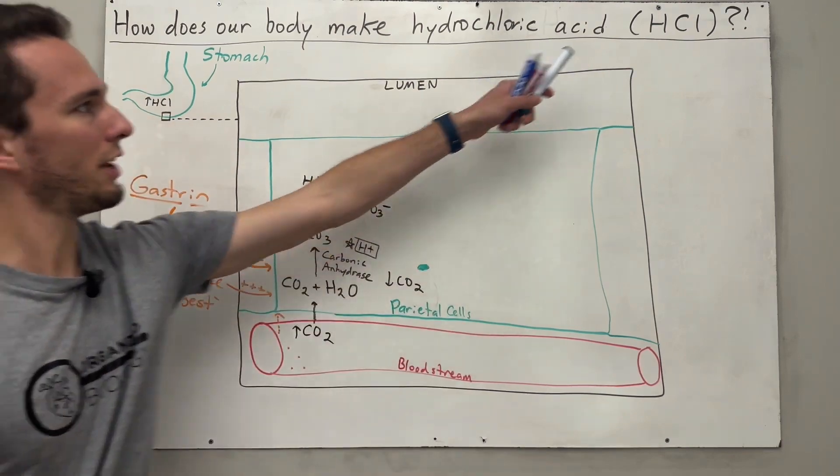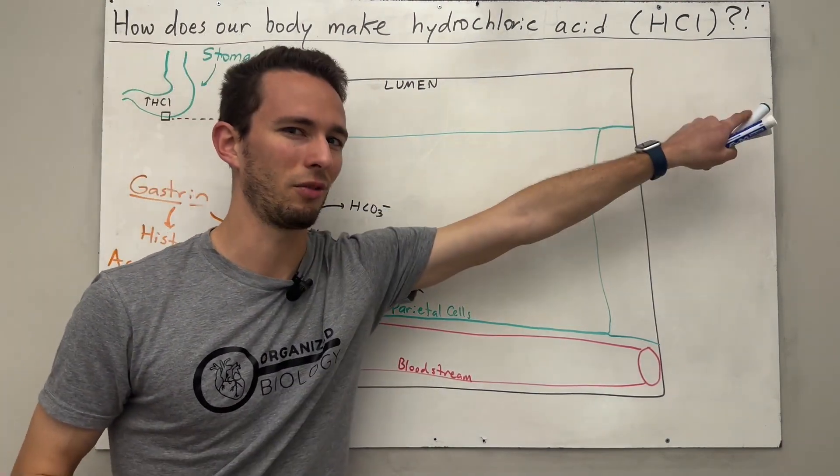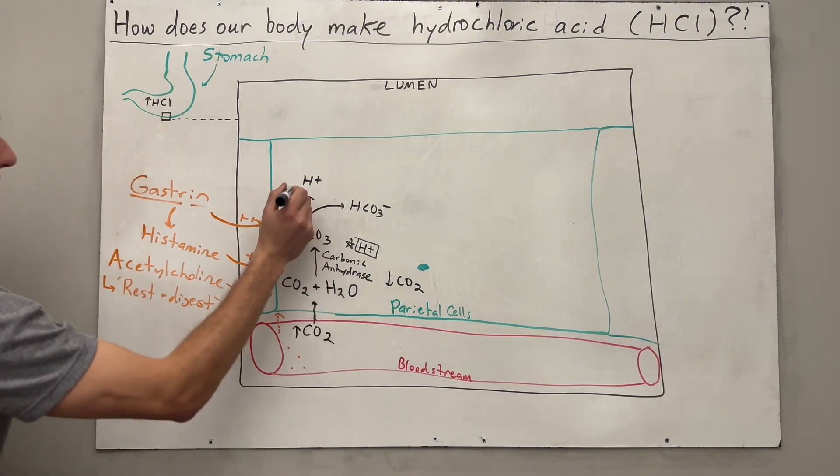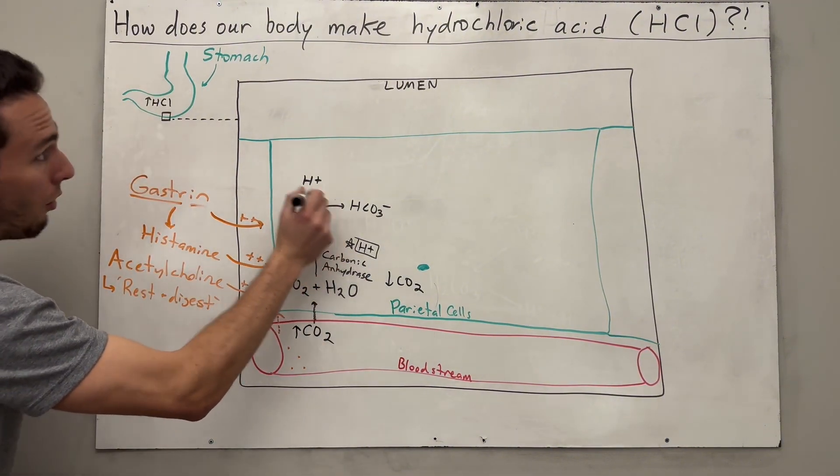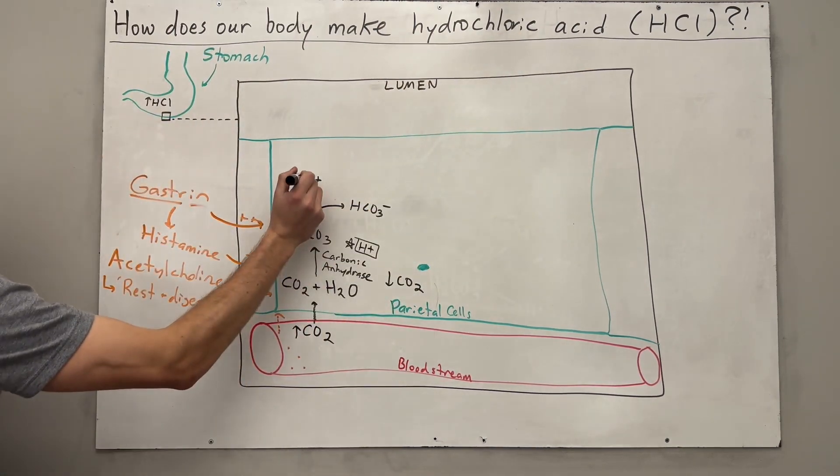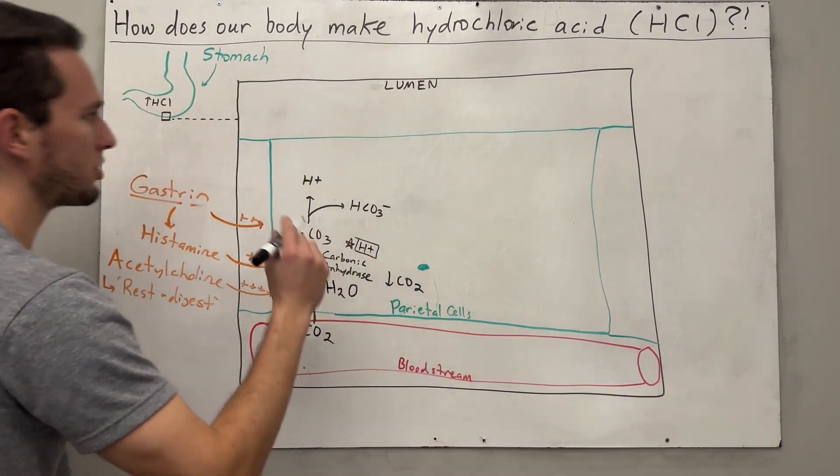Now notice right now, what are we trying to produce? Hydrochloric acid, HCl, right? Now H is the first part of that, right? So we need to get this H where? Well, we need to get it into the stomach lumen in this opening, right? So somehow, some way we need to get that out there. So let's follow that track first.